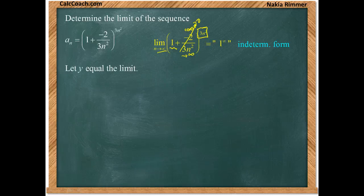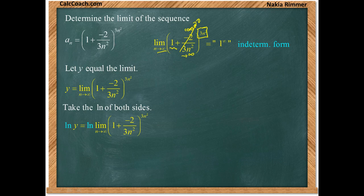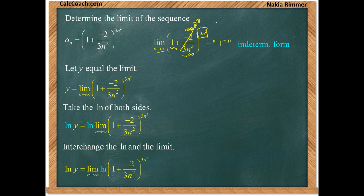Here are the steps. The first thing you need to do is let some variable stand for the limit — we use y. The three n squared that's in an exponent must come down, and in order to do that we have to introduce a natural log. So we're going to take the natural log of both sides: the log of y equals the log of that limit. And what we can do is interchange the natural log and the limit, so we're talking about the limit of the log.